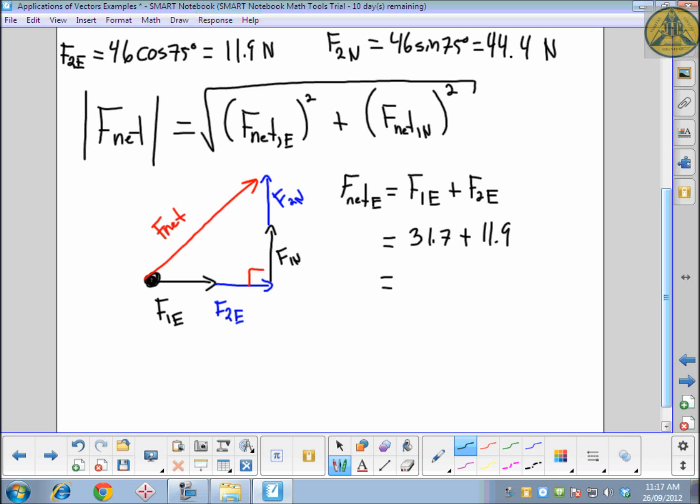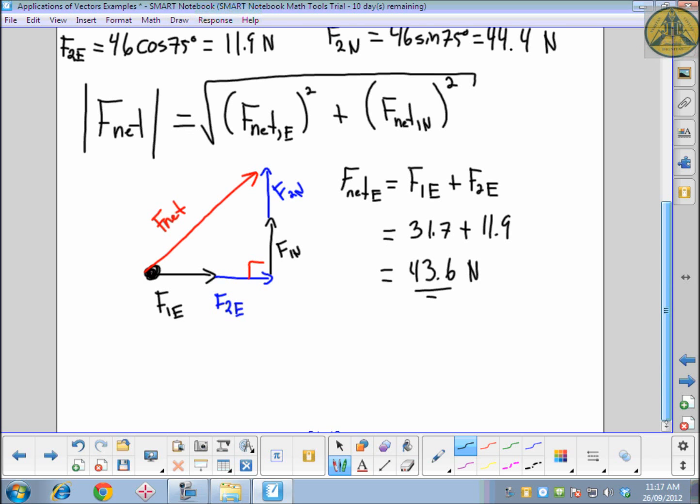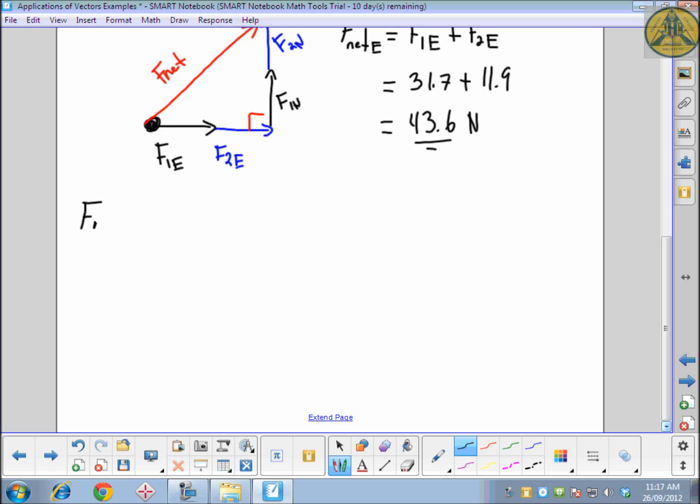And then down here, for our triangle, F net, the northern components is the first one in the north, added to the second force's component in the north. This is 14.8, added to 44.4. And that totals to be 59.2 newtons. So those are our two components that we're going to add together vectorly. So in other words, we're going to do Pythagorean theorem with them and figure out our net force.